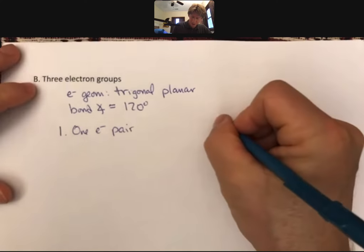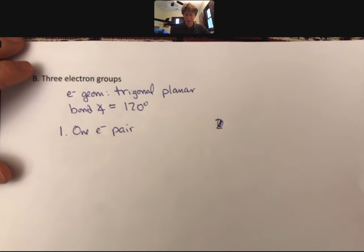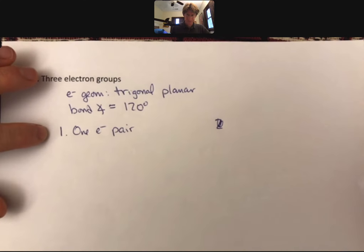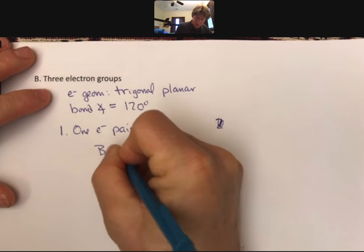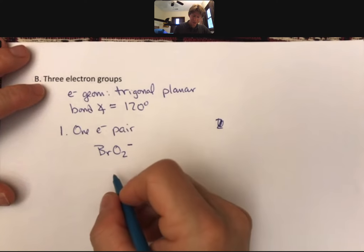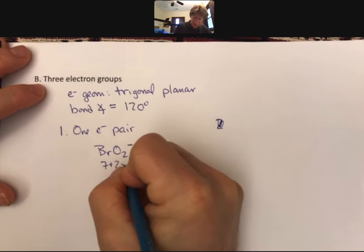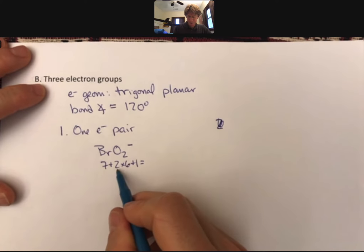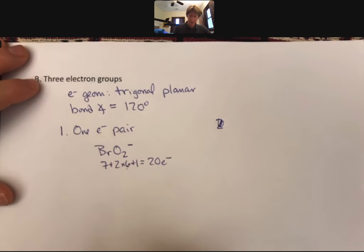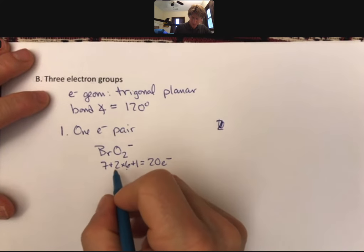For one electron pair, let's see if I can think of a good example. BrO2 minus. So BrO2 minus, 7 plus 2 times 6 plus 1, that's going to be 12, and 8 is 20 electrons. For 20 electrons, is that 12? So we're going to do BrO.